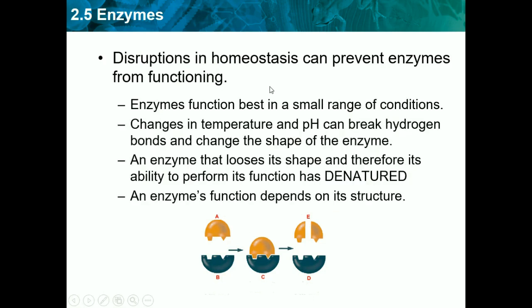Disruptions in homeostasis can prevent enzymes from functioning. Enzymes function best in a small range of conditions. Changes in temperature and pH can break hydrogen bonds and change the shape of the enzyme. Enzymes are very fragile — if our body temperature changes drastically, they will stop working and eventually cause death. An enzyme that loses its shape and therefore its ability to perform its function has denatured. An enzyme's function depends on its structure, and as we know, structure and function are related.